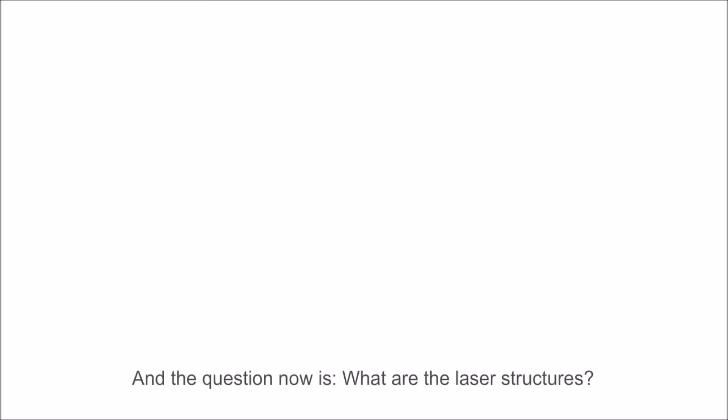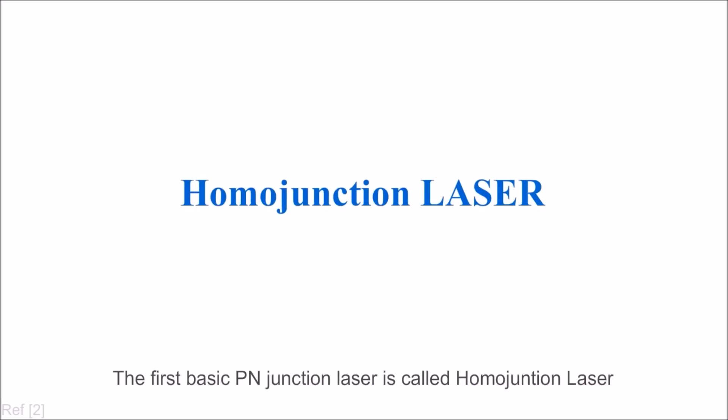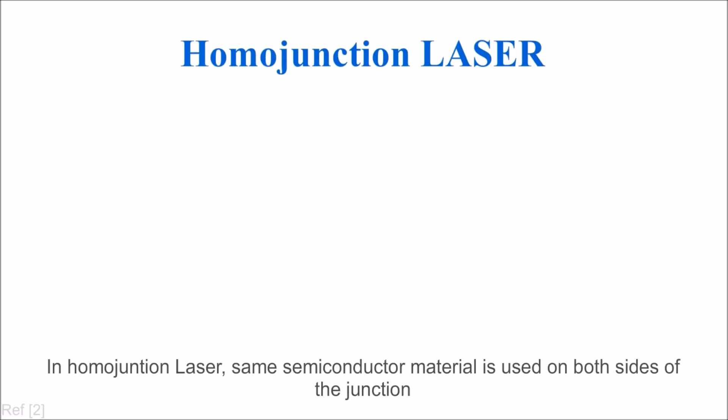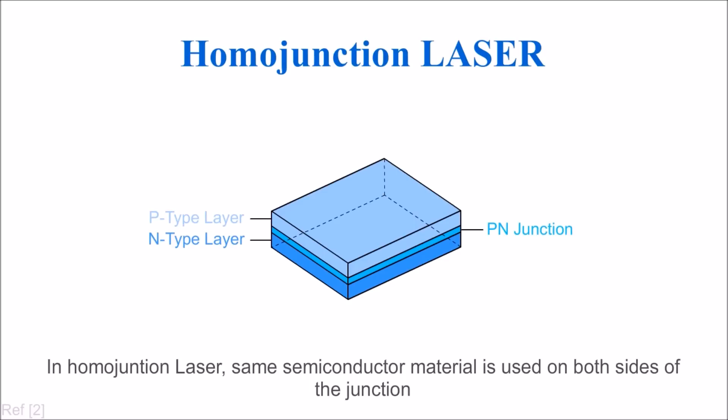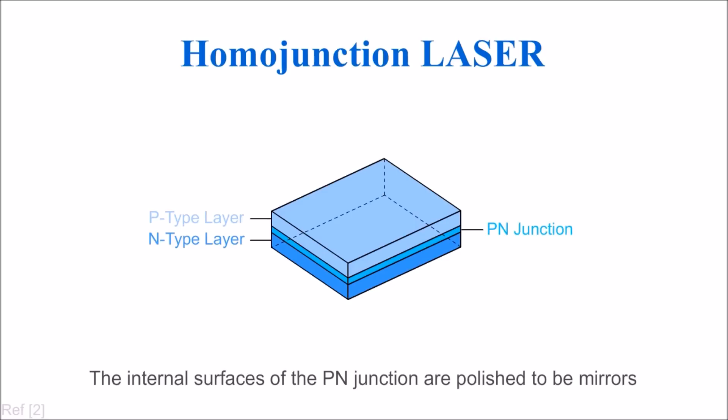What are the laser structures? The first p-n junction laser is called homojunction laser. In homojunction laser, the same semiconductor material is used on both sides of the junction. The internal surfaces of the p-n junction are polished to be mirrors.